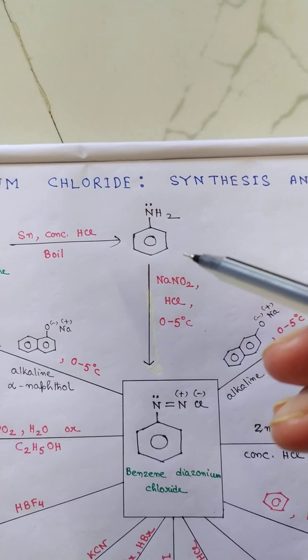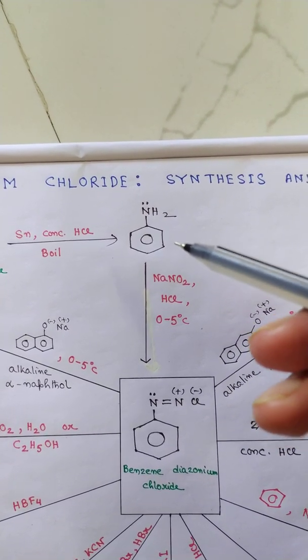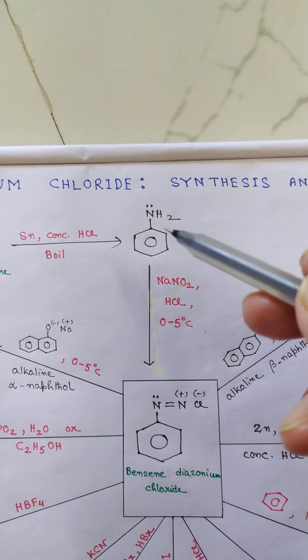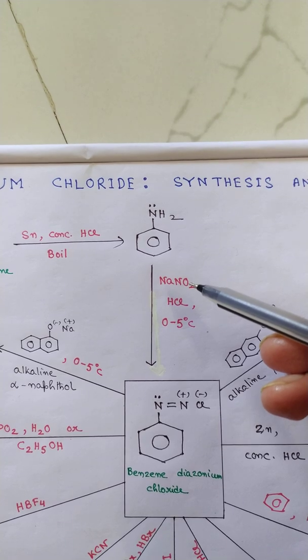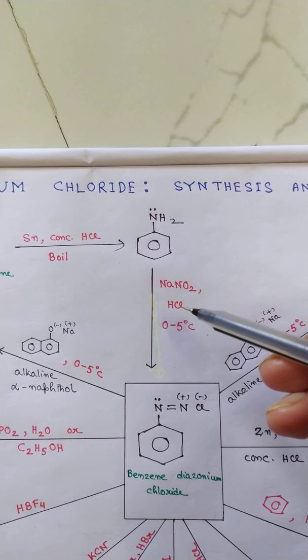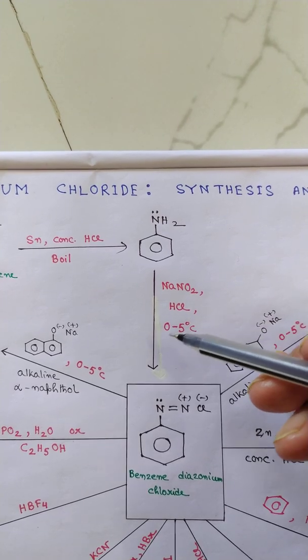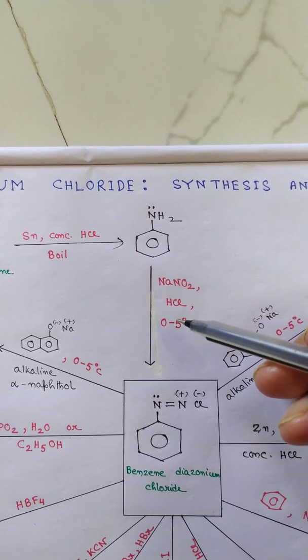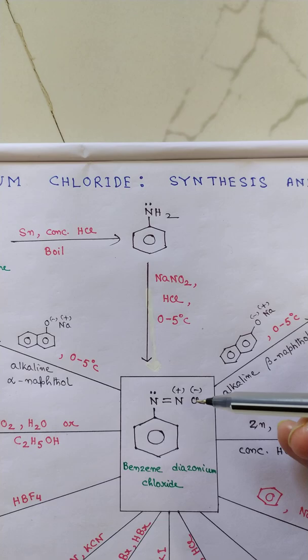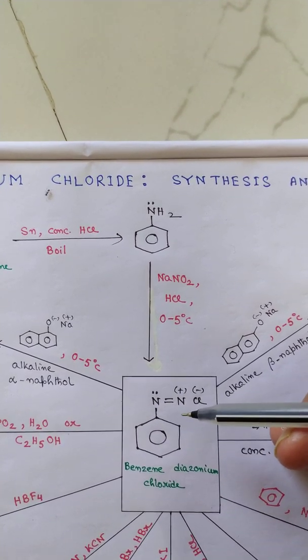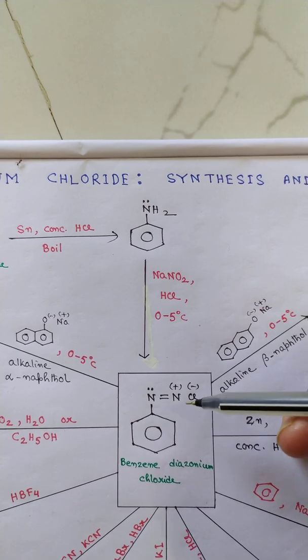Now nitrous acid, being unstable, is unavailable in market, so we have to produce it in the reaction vessel. We add to the solution NaNO2 and HCl, and the reaction mixture is kept in an ice cold bath since the product obtained in this reaction is benzene diazonium chloride, which is highly unstable. The only way to keep it stable is to keep the solution very cold.